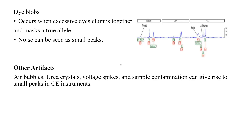Noise can be seen as small peaks. Other artifacts present in electrophoreograms can include air bubbles, urea crystals, voltage spikes, and sample contamination.